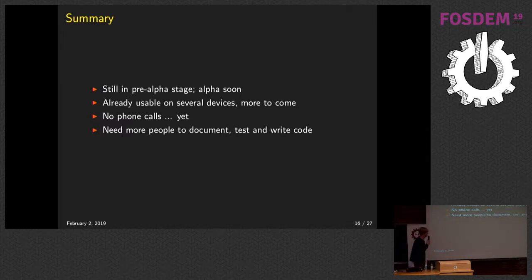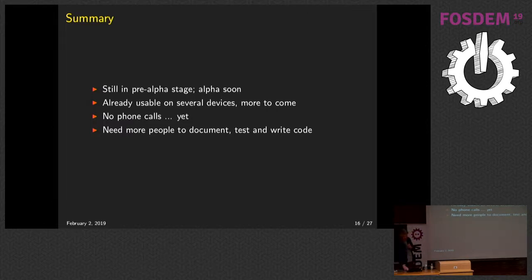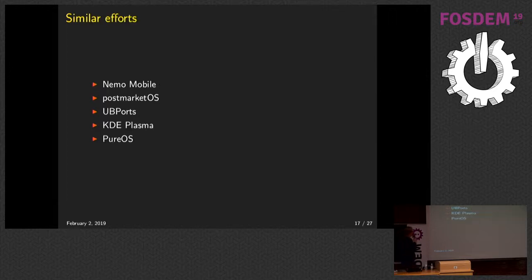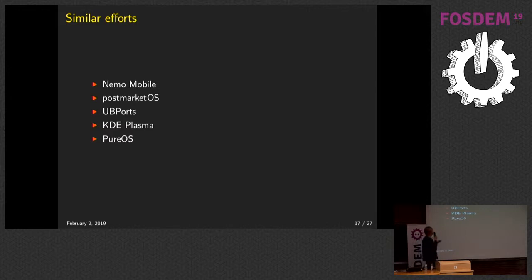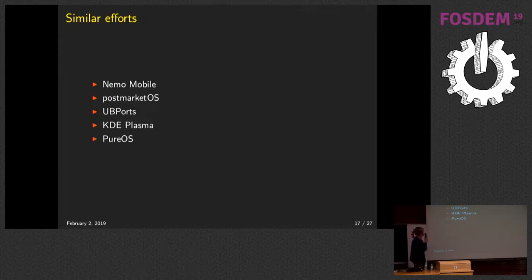Summary: we're still in pre-alpha stage, we need your help, and we're going for an alpha soon. It's already usable on several devices, but there are no phone calls yet — you can ring someone but you don't hear anything. We have a wiki but it needs more love. Similar efforts include Nemo Mobile, which uses the same base as Sailfish OS but also uses libhybris from Android. Postmarket OS is cool and supports around 150 devices, but they mostly use vendor kernels, which doesn't align with our mainline-only goals. There's also UB Ports, KDE Plasma Mobile, and PureOS being developed by Purism with their Librem 5 phone.